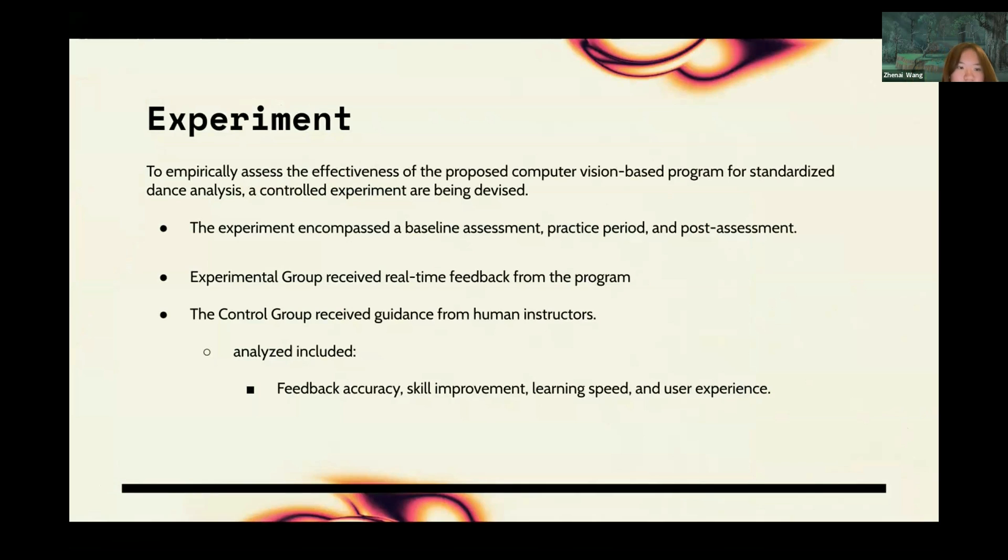To empirically assess the effectiveness of the proposed computer vision-based program for standardized dance analysis, control experiments can be devised. The objective is to gauge how the program's real-time feedback and standardized assessments influence dancer skill improvement compared to conventional methods. The experiment encompasses baseline assessments, practice periods, and post-assessments. During the practice phase, the experimental group received real-time feedback from the program, while the control group received guidance from human instructors.